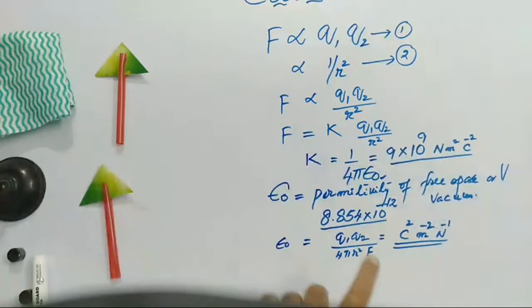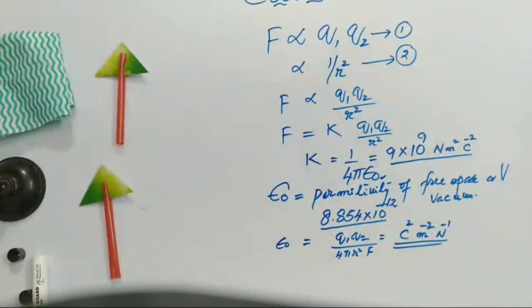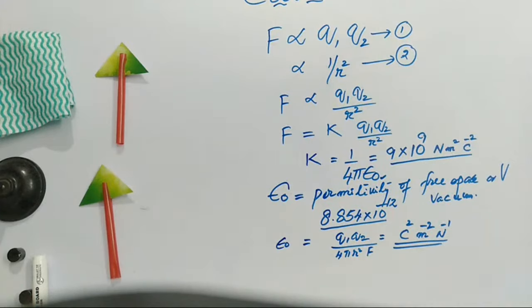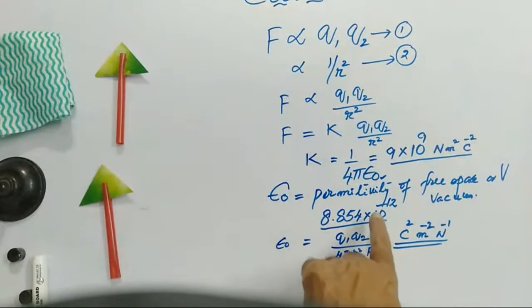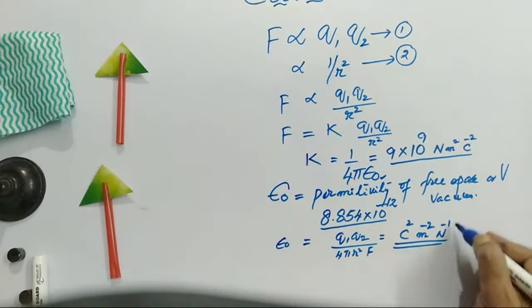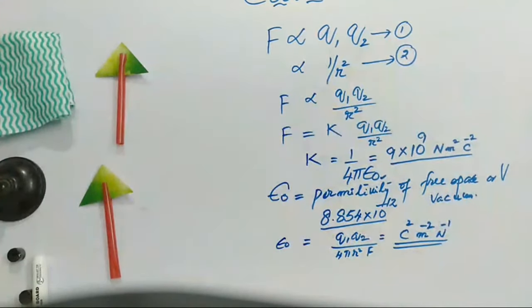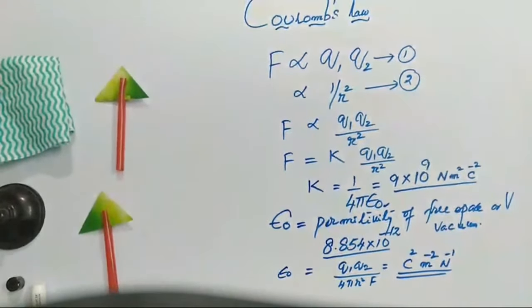This is the permittivity of free space. What is permittivity? It is the property of the medium — how fast it allows the electric field. Just like the speed of light depends on the medium, permittivity also varies from medium to medium. Epsilon naught, 8.854 into 10 to the power of minus 12, will be used for vacuum. This is the SI unit for it. Let me just recapitulate what we have studied under Coulomb's law.